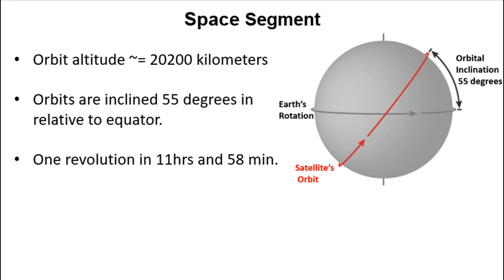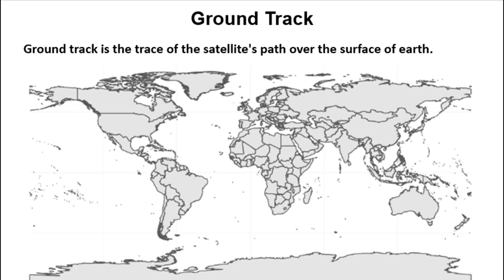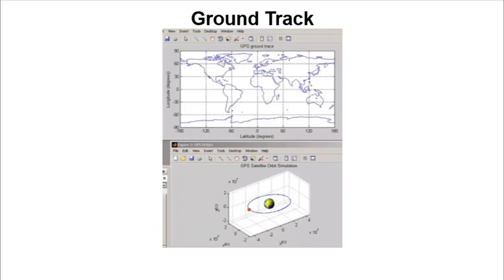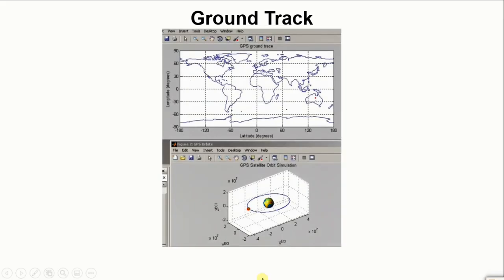So it becomes important to look at the path that the satellites take on the ground. This is called ground track — the trace of the satellite's path over the surface of Earth, or the projection of the satellite's path over the surface of Earth. What we're going to show you here is a simulation of the ground track of one satellite. We will start with a satellite whose projection on Earth is somewhere in Australia, just as an example, and we will see the path that the satellite projection will take as the satellite moves along its orbit. The simulation is for 24 hours, and in 24 hours the satellite will make two rotations around the Earth.